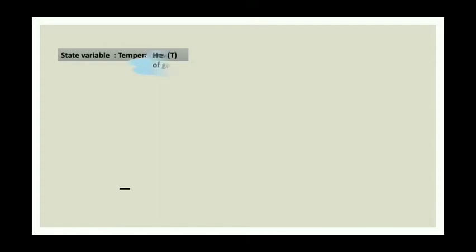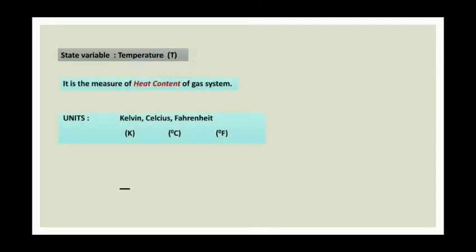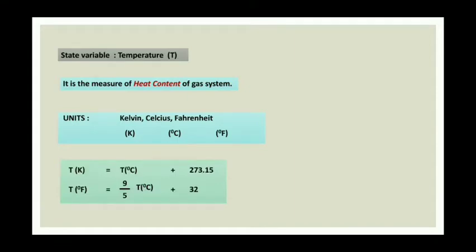Another state variable is temperature. Temperature of a gas is a measure of heat content of a gas. Its units are Kelvin, Celsius, and Fahrenheit. Mostly we will be using the Kelvin scale. To convert degree Celsius into Kelvin, we add 273.15 to degree Celsius. To convert degree Celsius into Fahrenheit, the formula is: degree Fahrenheit is equal to 9/5 times degree Celsius plus 32. This is a very important formula you should remember.